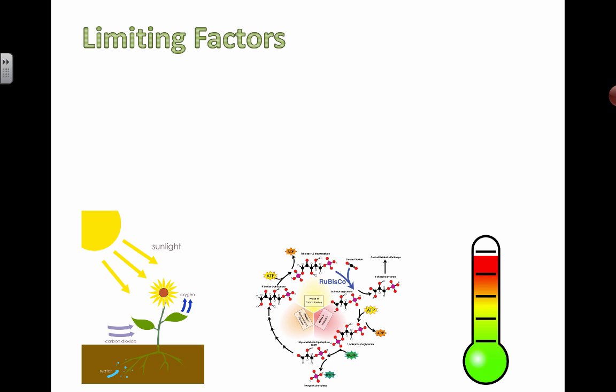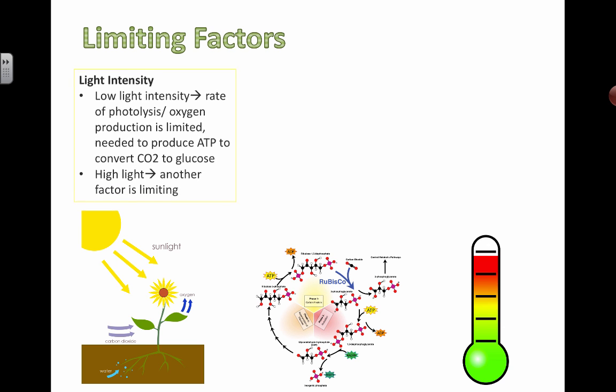Let's look at some of these limiting factors. In another video, I've actually drawn out the details of the light-dependent reactions and also the light-independent reactions, like the Calvin cycle. You can actually see how these three factors are specifically limiting particular parts of those metabolic reactions. I'll try to reference that particular video so you can take a look if you want to go one step further. Let's look at light first.